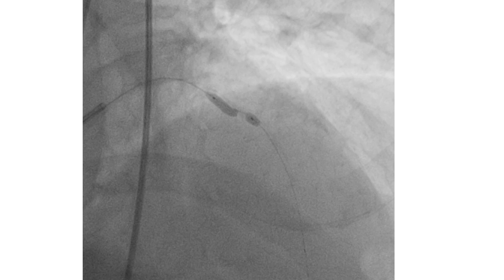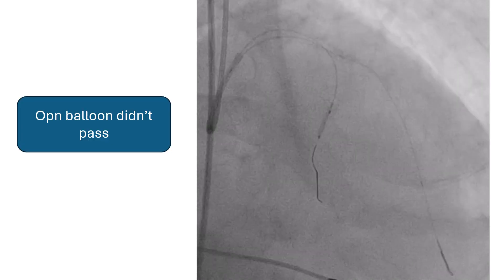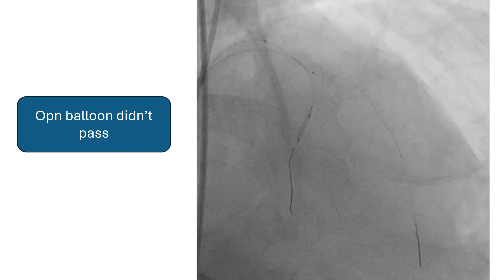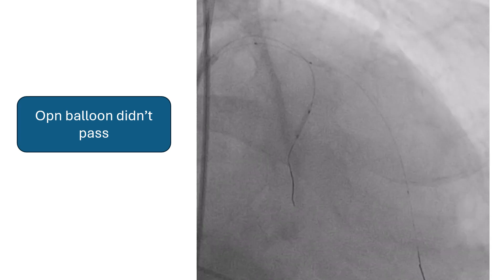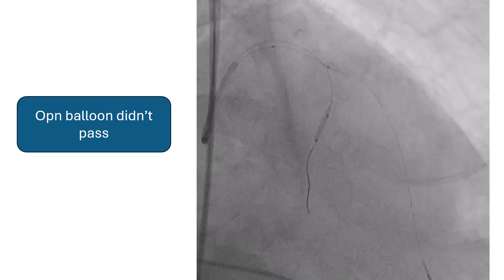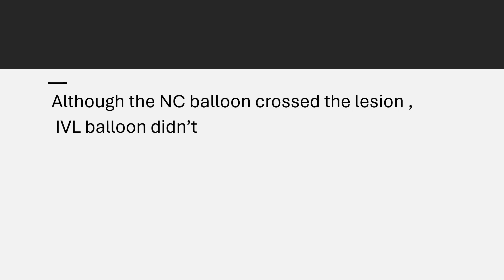Going back to our case: after trying with the NC balloon, the previous operator used the OPN balloon, but it was not possible to cross the lesion even after anchoring to the septal branch. We then tried to pass an IVL balloon — although the NC balloon crossed the lesion, the IVL balloon did not cross. So we determined that some debulking was necessary.